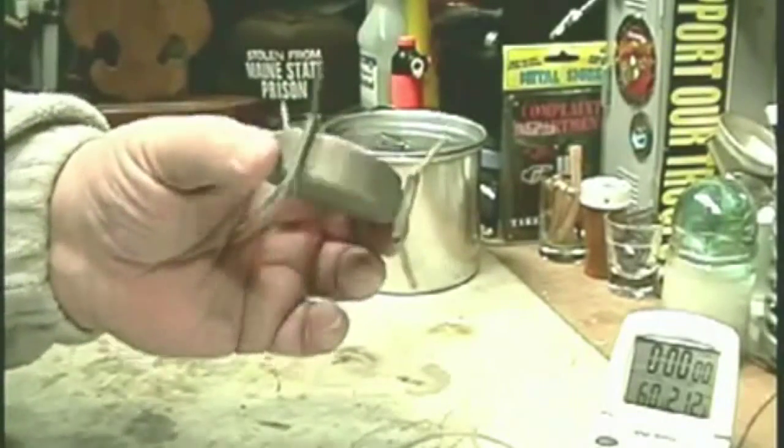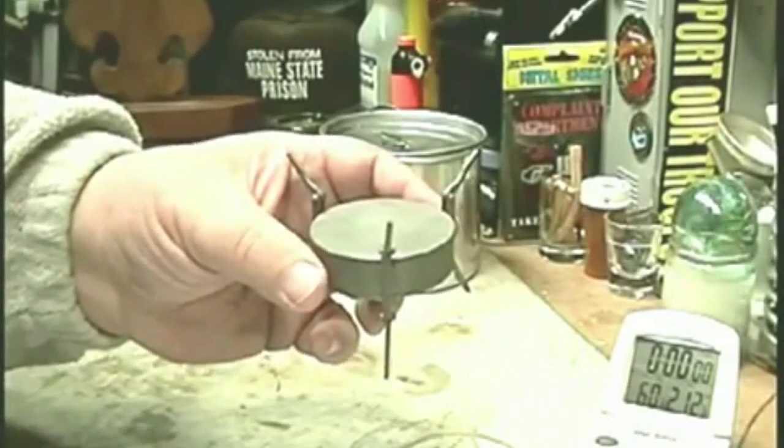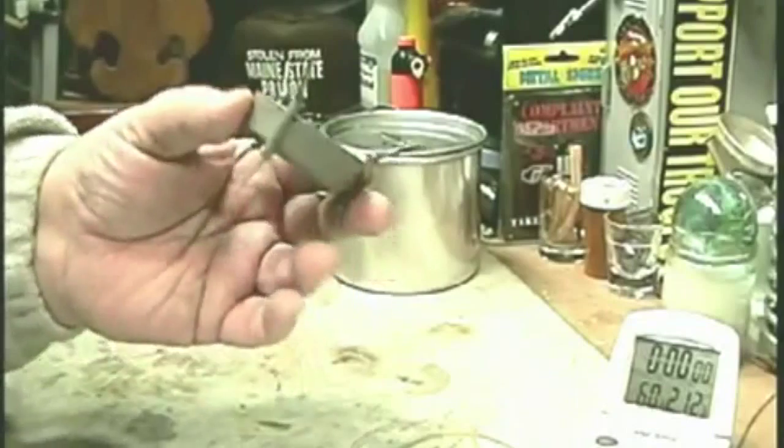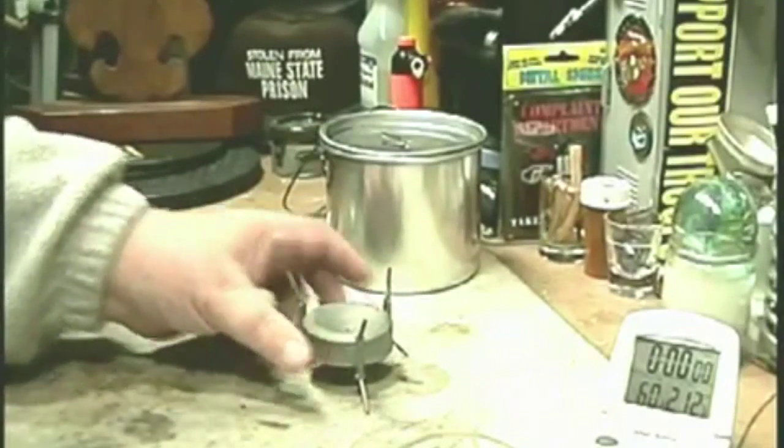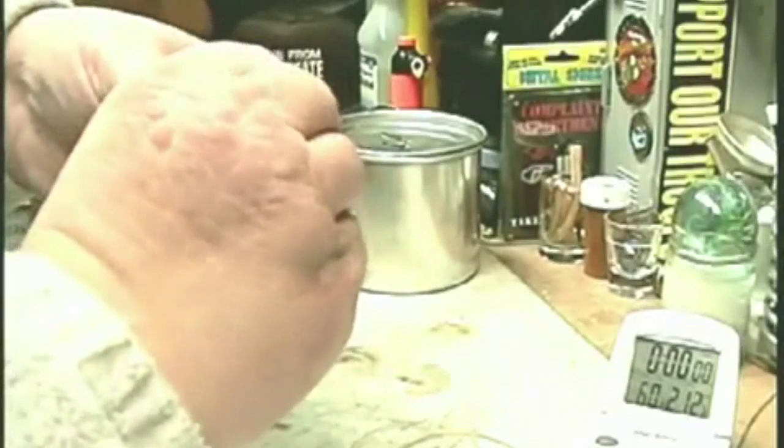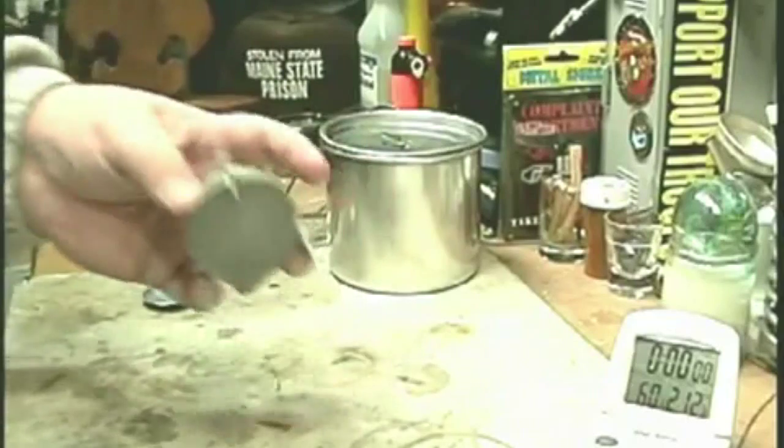One side is for alcohol, supposedly the other side is for a heating tab. I've seen where some people, instead of setting this on the ground like this, they straighten the legs out and stick it down in the ground so that it's more steady.